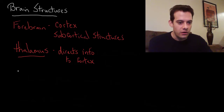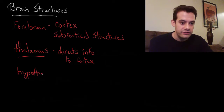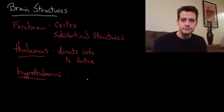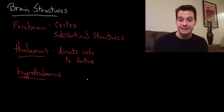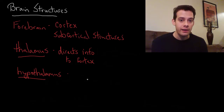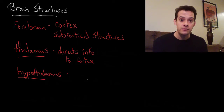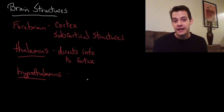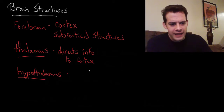Under the thalamus we have a region called the hypothalamus — which literally means 'under thalamus.' The hypothalamus is involved in a number of different processes: hunger, the fight or flight response, and reward and motivation through the nucleus accumbens. You can remember the four main activities of the hypothalamus with the four F's — a bad joke referring to feeding, fighting, fleeing, and mating.